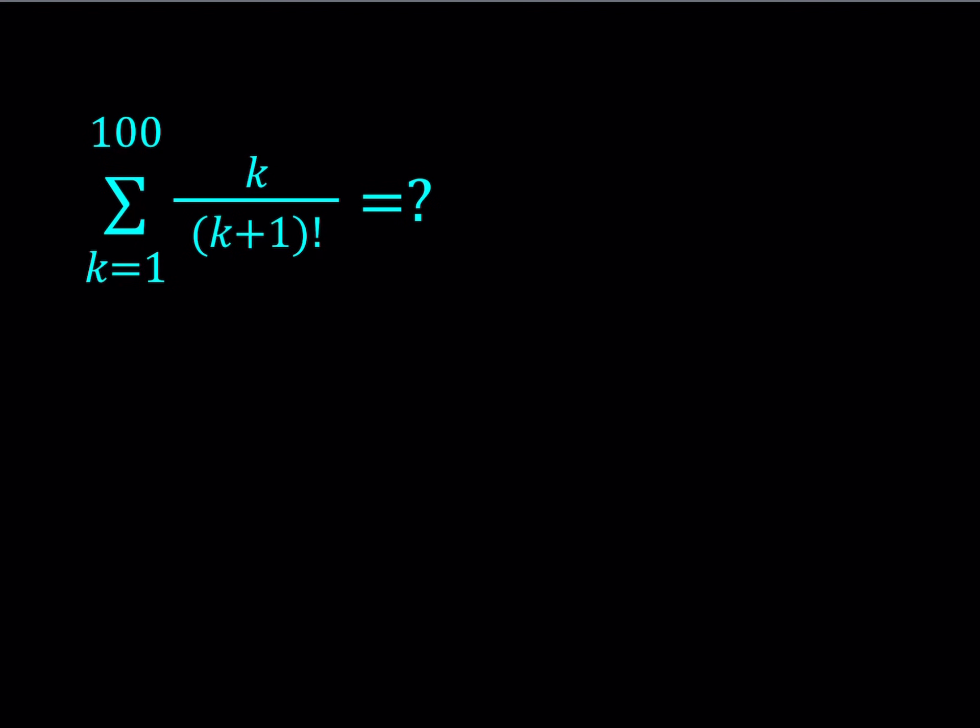We have k equals 1 to 100, and we're adding the quantity k divided by k plus 1 factorial. To get an idea, sometimes we substitute certain values. For example, what happens if k is equal to 1? I get 1 over 2 factorial. And then if I replace k with 2, I get 2 over 3 factorial. And then I get 3 over 4 factorial, dot dot dot. This is going to go on all the way up to 100 divided by 101 factorial.